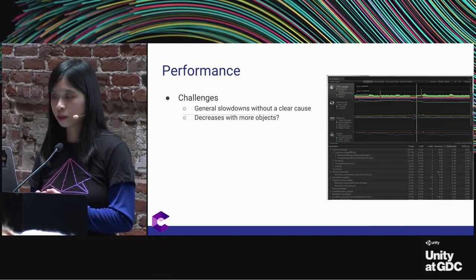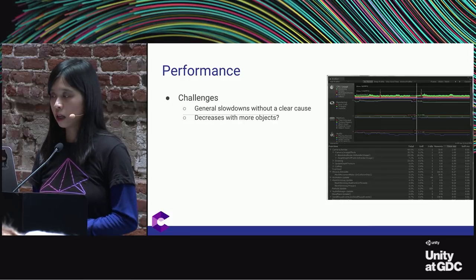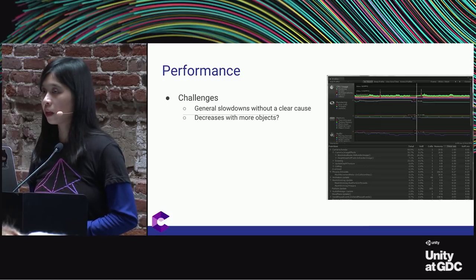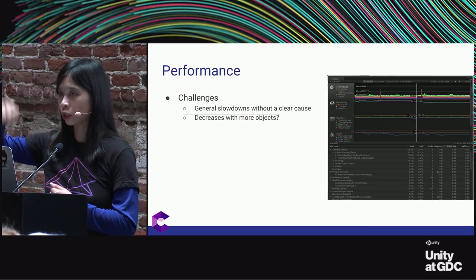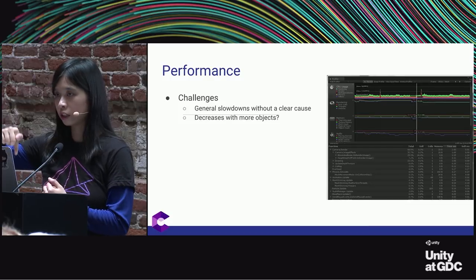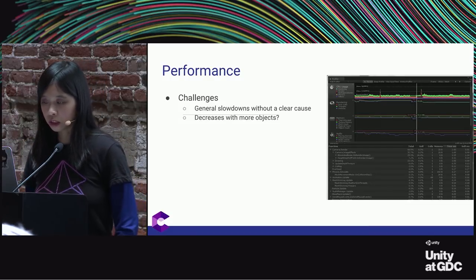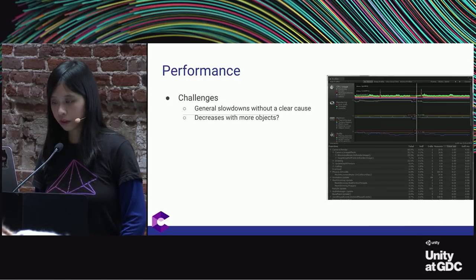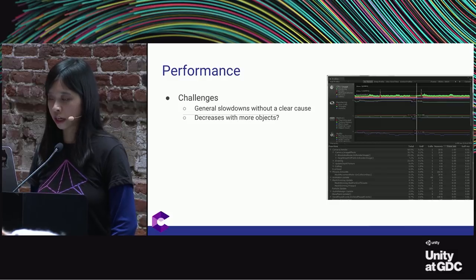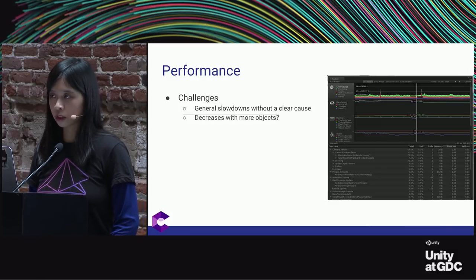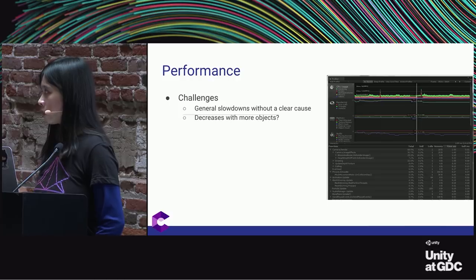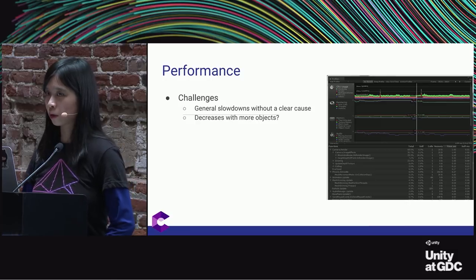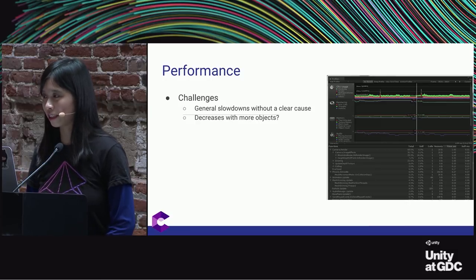If you have an object that moves around constantly — one great example is a fish swimming around — consider having an anchor around the central point where the object is moving and keeping just that one anchor. When you delete objects, always delete your old anchors. Something you need to consider is that users can lose or forget objects they have placed, so think about detecting when those objects have been lost and are floating around uselessly in your scene, and clean them up.